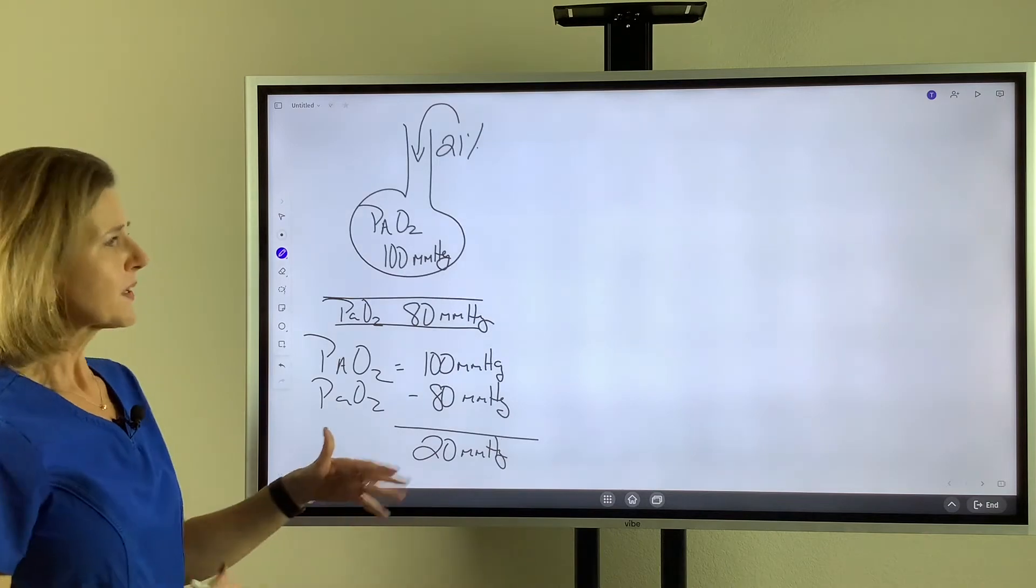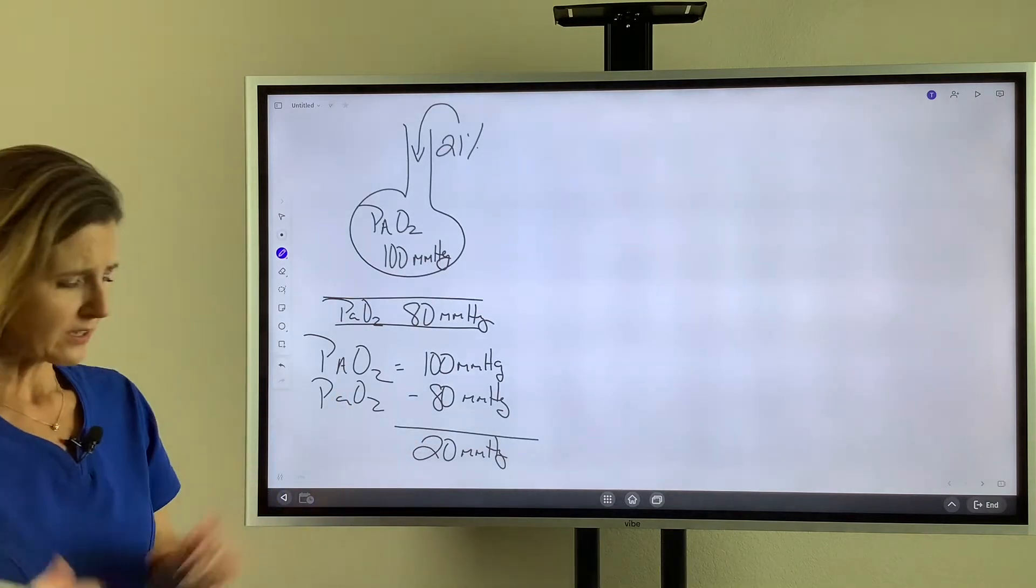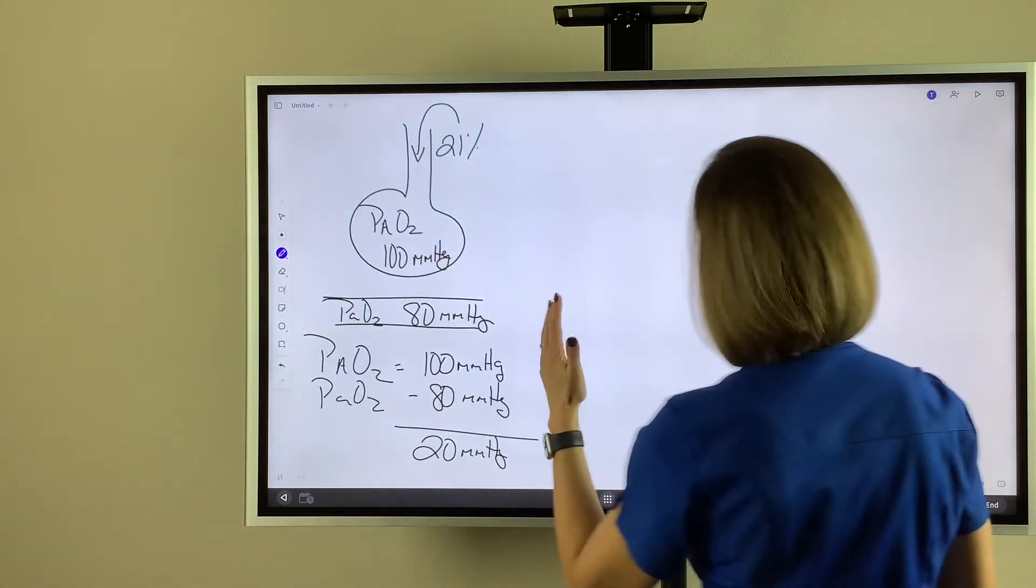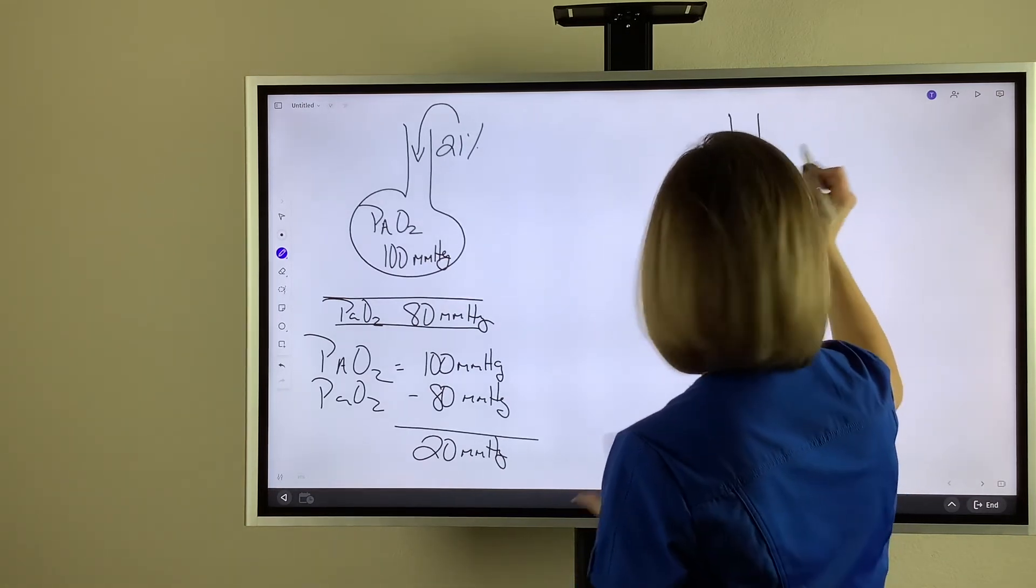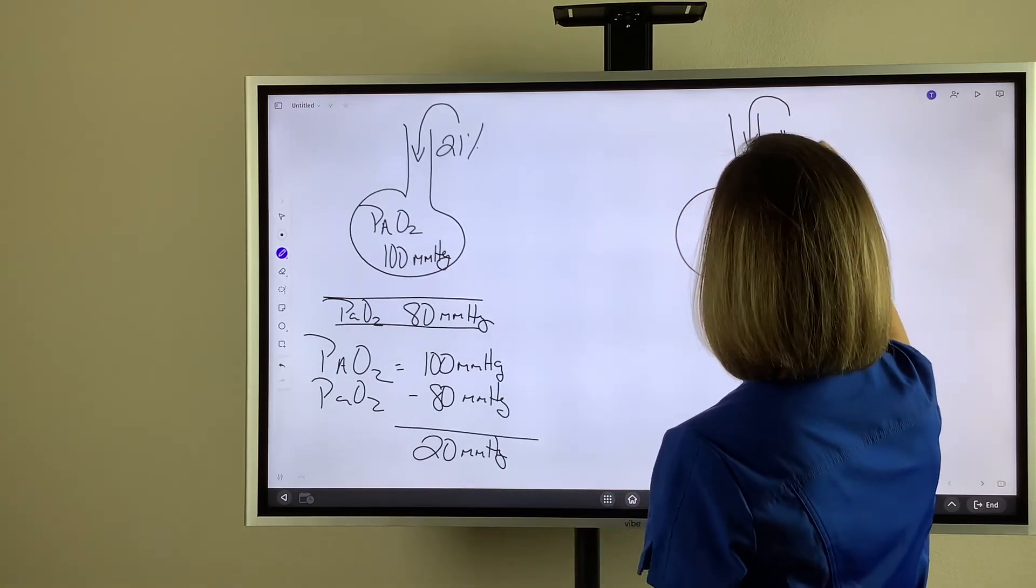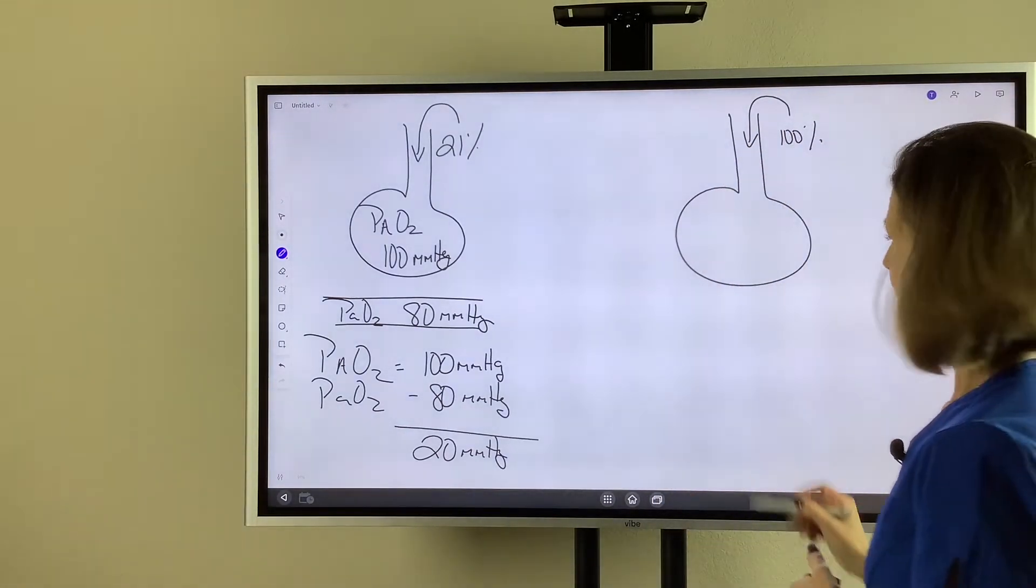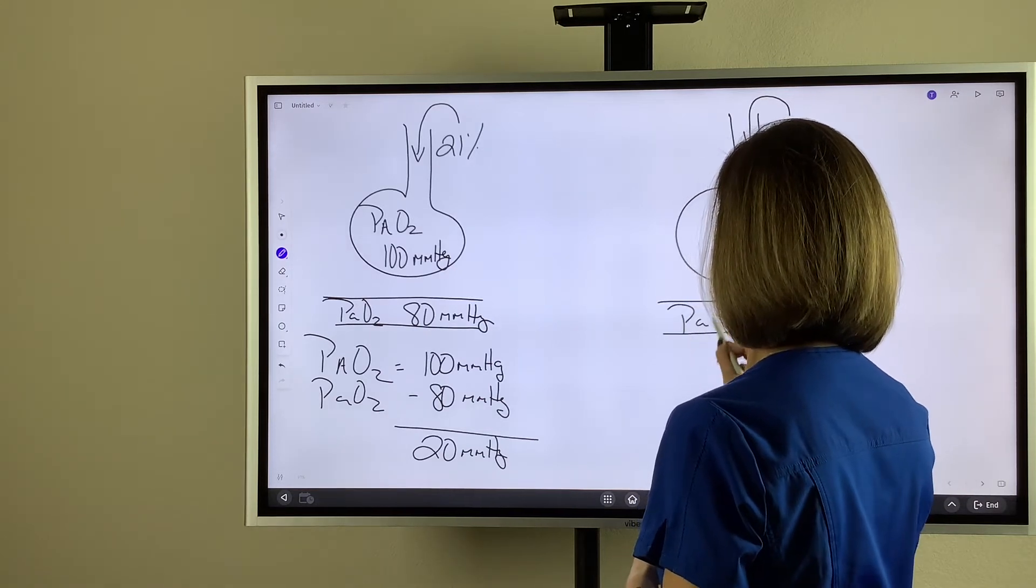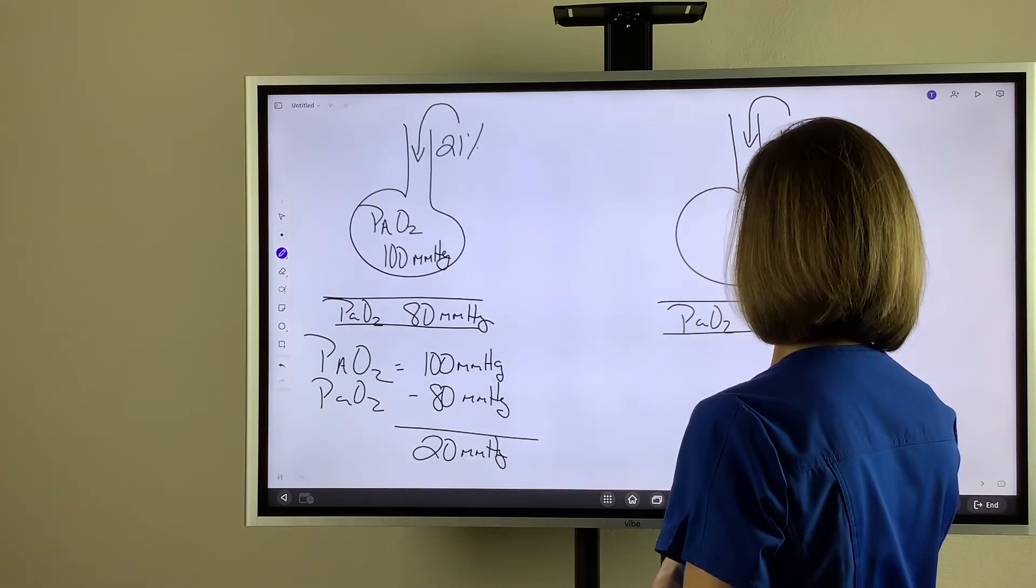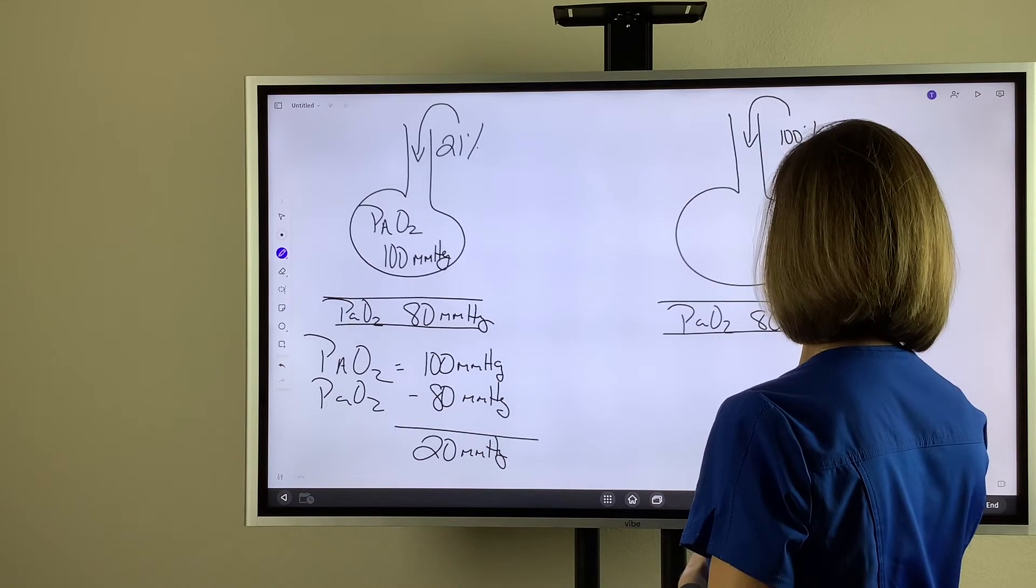Now let's say the same patient - we go on vacation for four days. We come back and the patient is still in the hospital, but now they're breathing 100% oxygen. We draw a blood gas, and the PaO2 is 80.